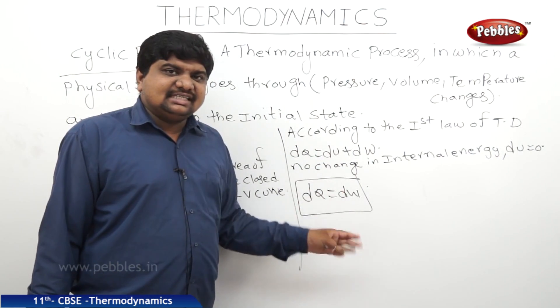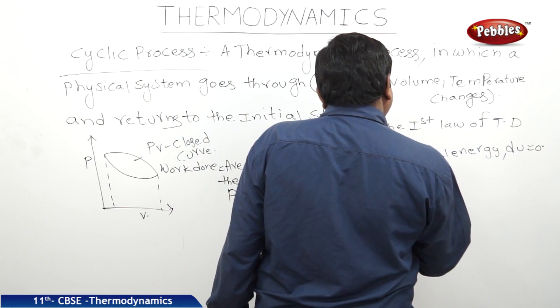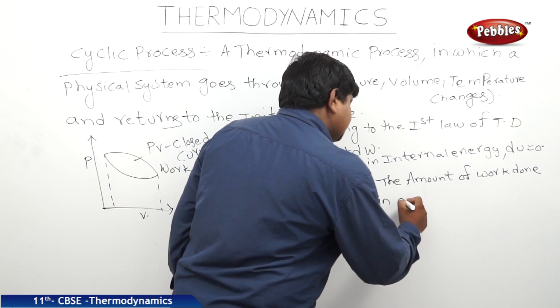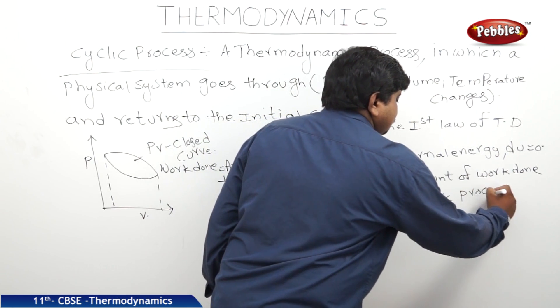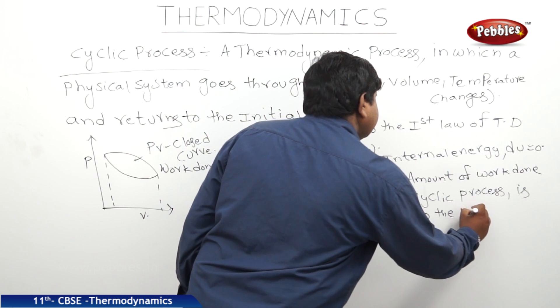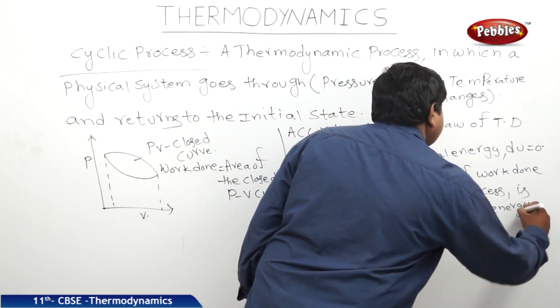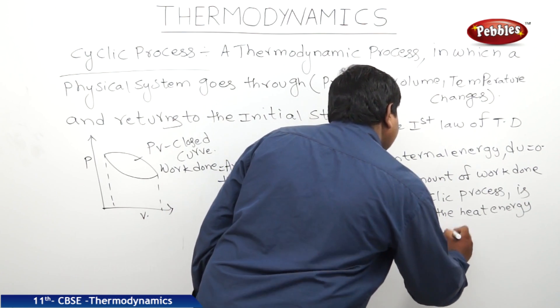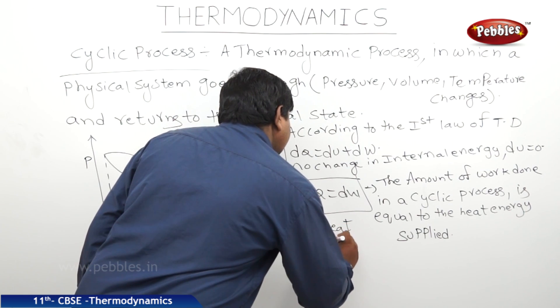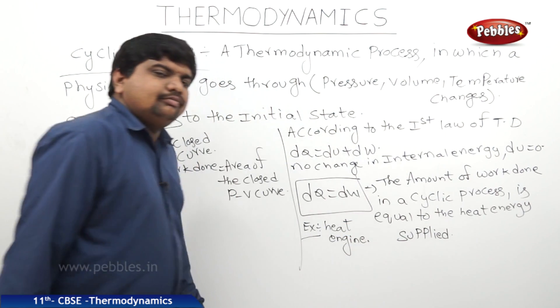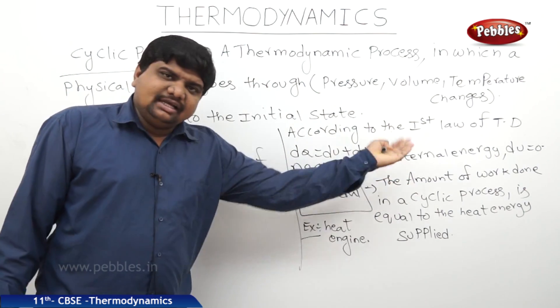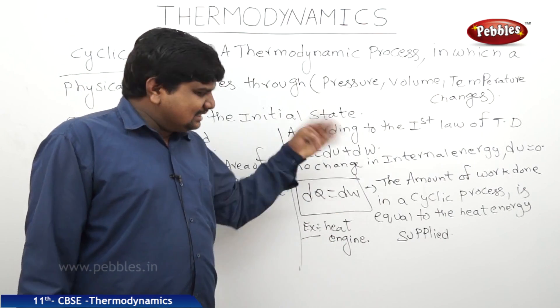The example for this is a heat engine. But this heat engine doesn't convert the whole-soul conversion of the heat energy to the work. There will be some conversion, remaining will be released in a form of exhaust gases, which is the loss.